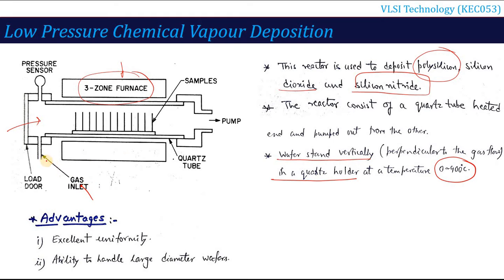There is a gas inlet where reactive gases flow in, and after the chemical reaction a deposition layer forms on our silicon wafer. This reactor is very important because it is used to deposit polysilicon, silicon dioxide, and silicon nitride — three materials you can deposit using the low pressure CVD process.